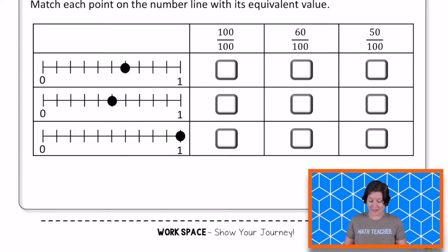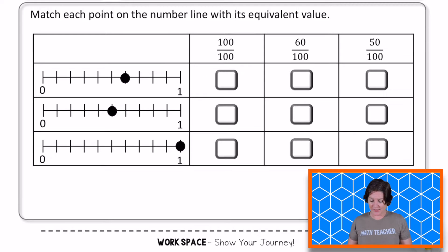Welcome back, fourth grade. All right, here we go. So this one says to match each point on the number line with its equivalent value. So we have 100 hundredths, 60 hundredths, and 50 hundredths. And I noticed something right away is that these number lines were actually broken into 10 hops.